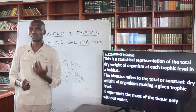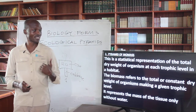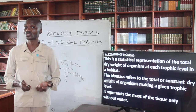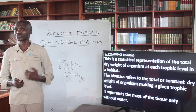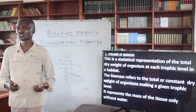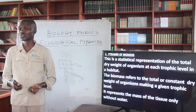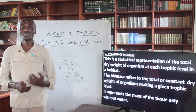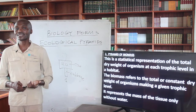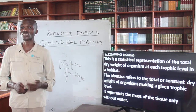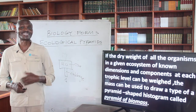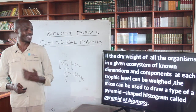Number two, we look at the pyramid of biomass. It is a statistical presentation of the total dry weight of organisms at each trophic level. Biomass refers to the total dry weight of organisms making up a given trophic level — it represents the mass of tissue only, without water, or in other words, the dry weight of organisms in a given ecosystem.